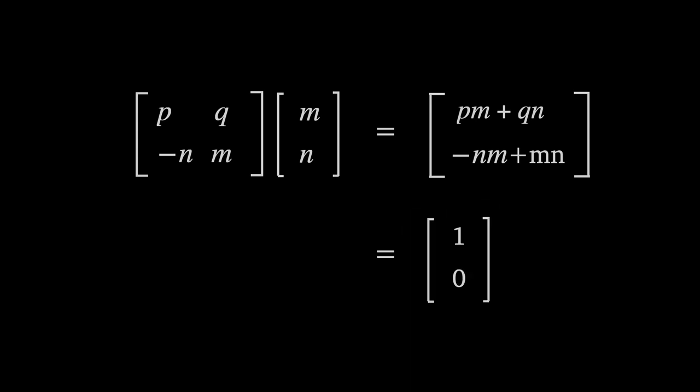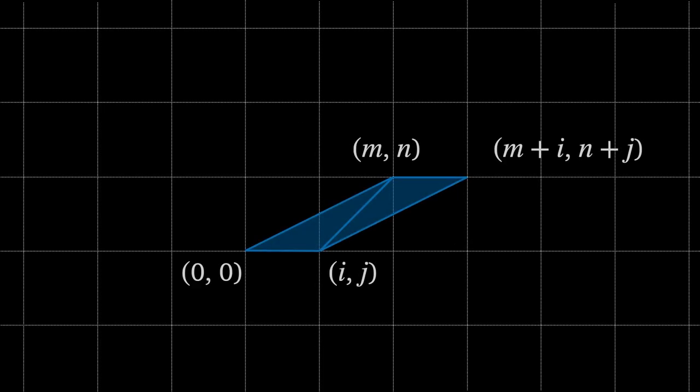The point (M,N) under the transform becomes (PM+QN) which is 1 by definition and (-NM+MN) which is 0. Of course the point (0,0) is unchanged by the matrix transform.